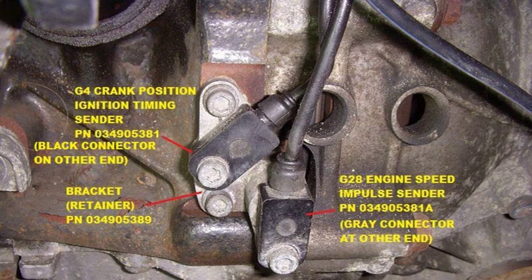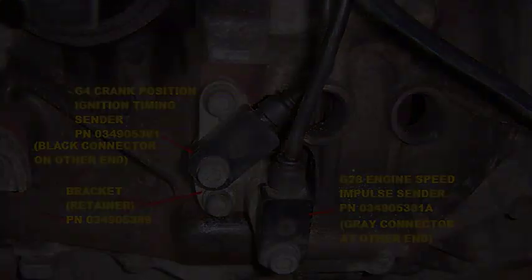The PO725 code can manifest in a variety of ways, depending on the severity of the issue. Some of the most common symptoms include erratic shifting, where the transmission may shift erratically or at the wrong times, causing rough or jerky acceleration; stalling, where the engine may stall unexpectedly, especially when idling or coming to a stop; reduced fuel economy, as the vehicle may experience decreased fuel efficiency due to the engine running at the wrong RPM; and check engine light illumination.